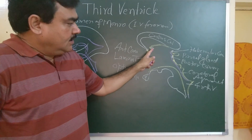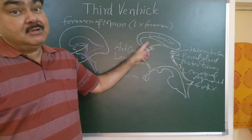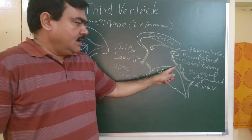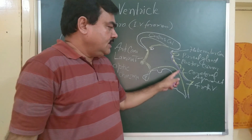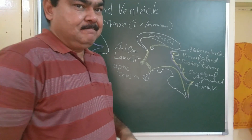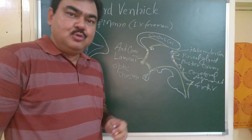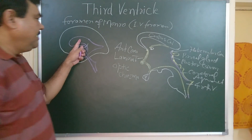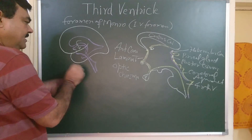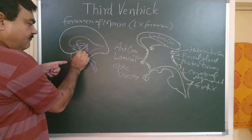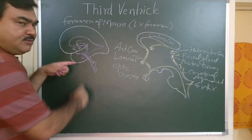So it has two communications: anterosuperiorly it communicates with the lateral ventricle, and posteroinferiorly it communicates with the fourth ventricle through the cerebral aqueduct. It receives cerebrospinal fluid and transmits it into the fourth ventricle through the cerebral aqueduct.